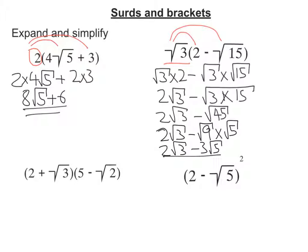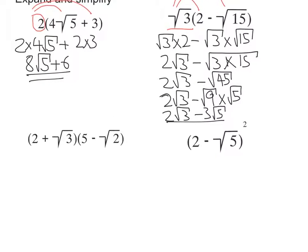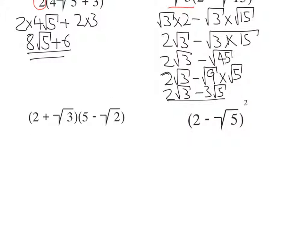Let's move on to the next one here. This time we've got a double bracket. So what I would suggest, as we've done in the past, is let's get our grid out. So we're going to have 2 here and root 3, 5 and negative root 2. And we're going to multiply.